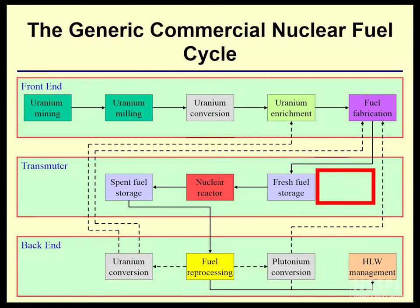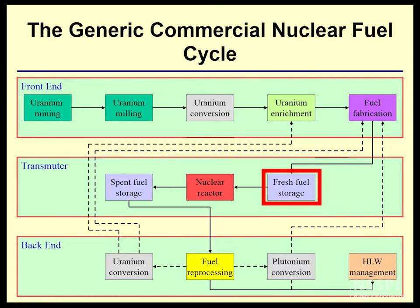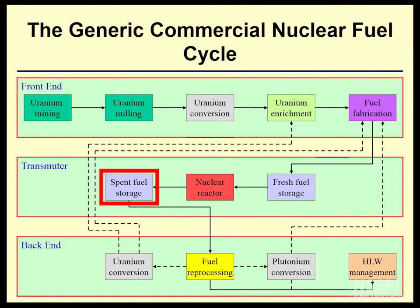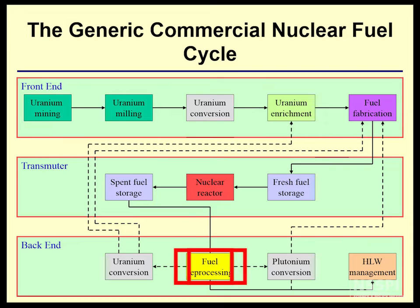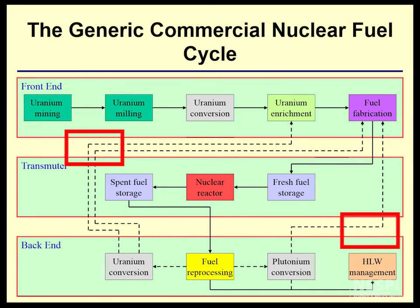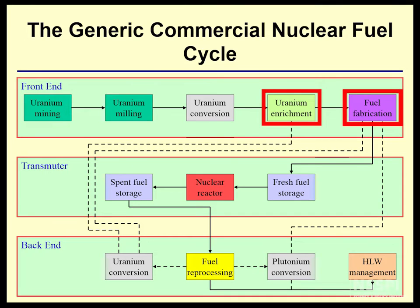That fuel can be stored in a storage facility at the reactor. Reactors may have separate fresh fuel storage from spent fuel storage. Fresh fuel has very little radiological hazard and very little heat load, so it can be stored in a much simpler way. Spent nuclear fuel typically has to be stored in water because it produces its own heat and is very radioactive, so it's stored in a water pool. The spent nuclear fuel can then go to a processing plant where plutonium and uranium are separated out and recycled. Waste products from any of these operations then need to be dealt with in a high-level waste management system.